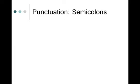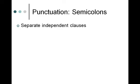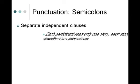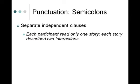Looking at semicolons: frequently use them to separate independent clauses, and again both clauses must be independent — able to stand on their own as complete sentences. For example: 'Each participant read only one story; each story described two interactions.' A useful test: if you could replace the semicolon with a comma and 'and' and it makes the same sense, you're probably using it correctly.